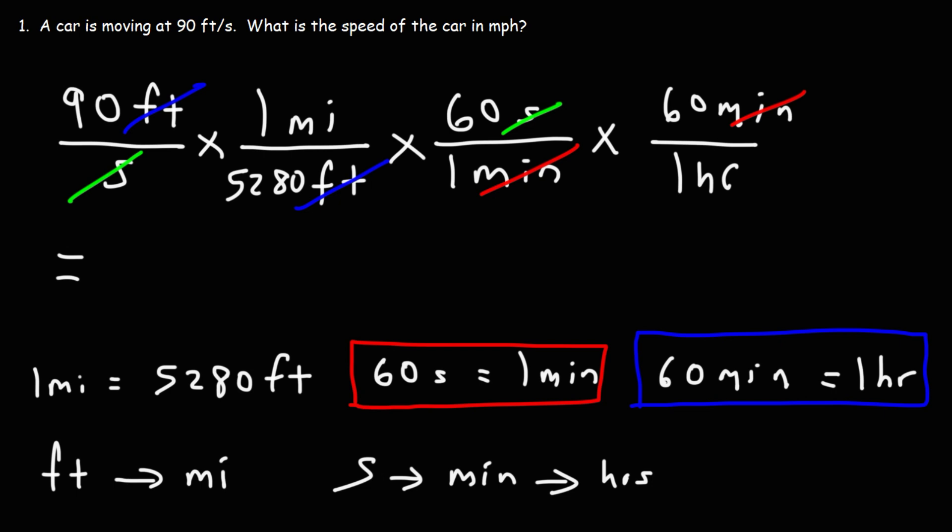So now let's go ahead and plug this in. It's going to be 90. By the way, when you do the operation, you need to multiply the numbers on top and divide by the numbers on the bottom. So we can take 90, multiply it by 60, and then multiply that by 60 again, and then divide that result by 5,280.